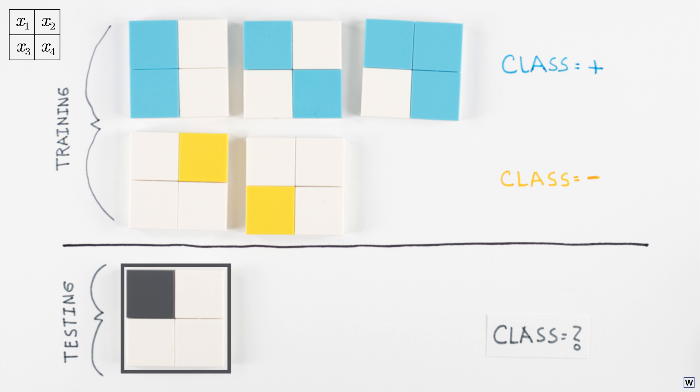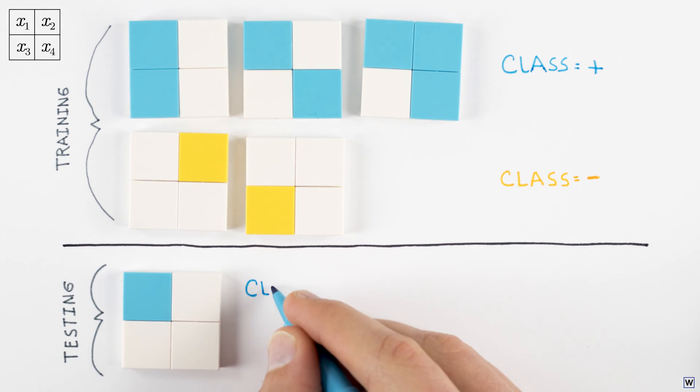If you set our new example as positive, you're right, great job. Your rule might have been that examples with an x1 value of 1 are positive.